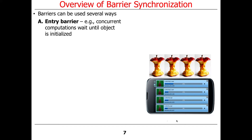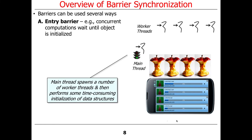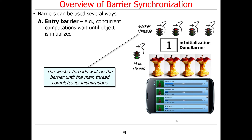With an entry barrier, you make a bunch of concurrent computations wait until something is initialized — until initialization is finished. For example, let's say we've got some image processing tasks to perform, and a main thread is going to spawn a bunch of worker threads — say four, but there could be n. These worker threads, sometimes called parties, all wait until the main thread performs some potentially time-consuming initialization of data structures, like pre-staging a bunch of images to process. So the worker threads all park there waiting until the main thread completes its initialization.